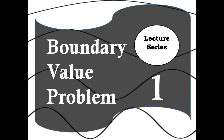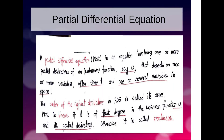This is lecture one on boundary value problems. A partial differential equation (PDE) is an equation involving one or more partial derivatives of an unknown function u that depends on two or more variables — often time t and one or several spatial variables x, y, or z. The order of the highest derivative is called its order. A PDE is linear if it is of first degree in u and its partial derivatives; otherwise it is called non-linear.